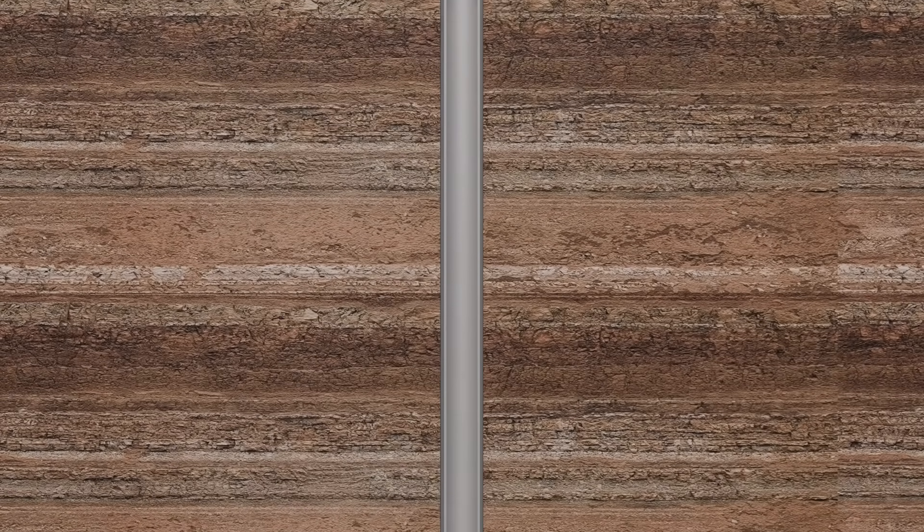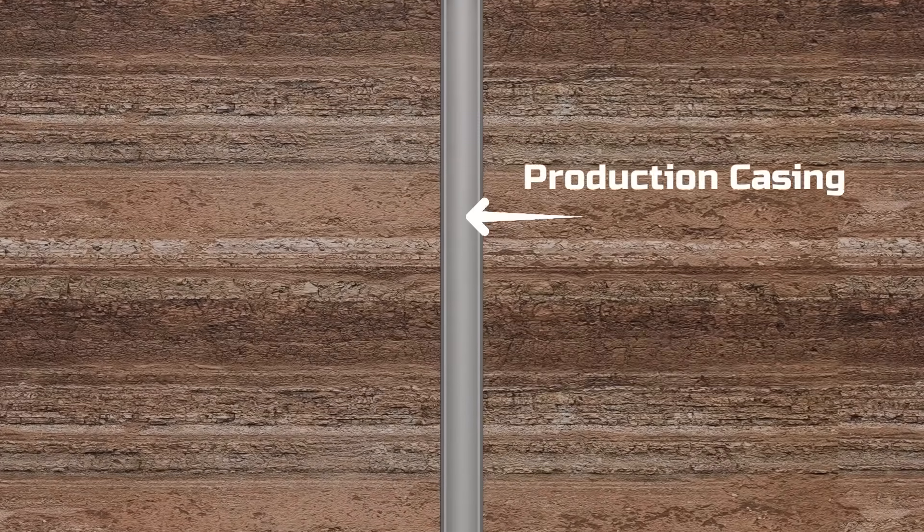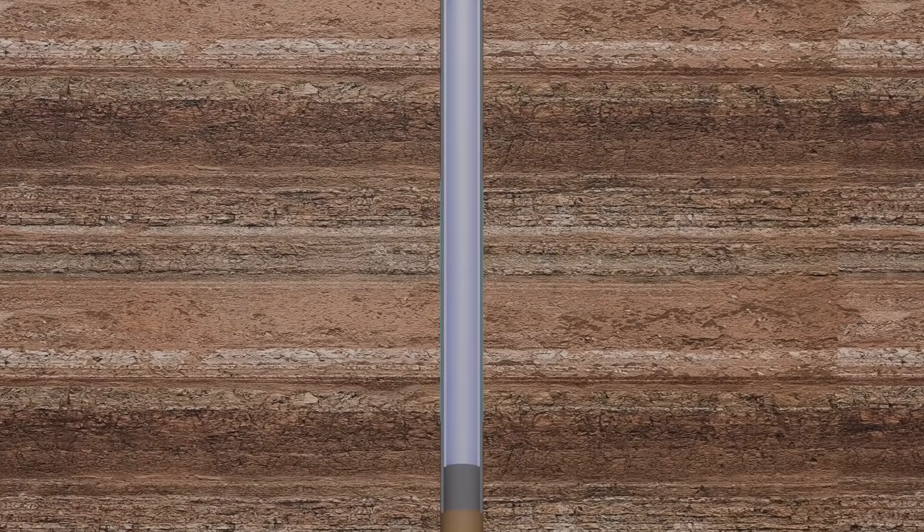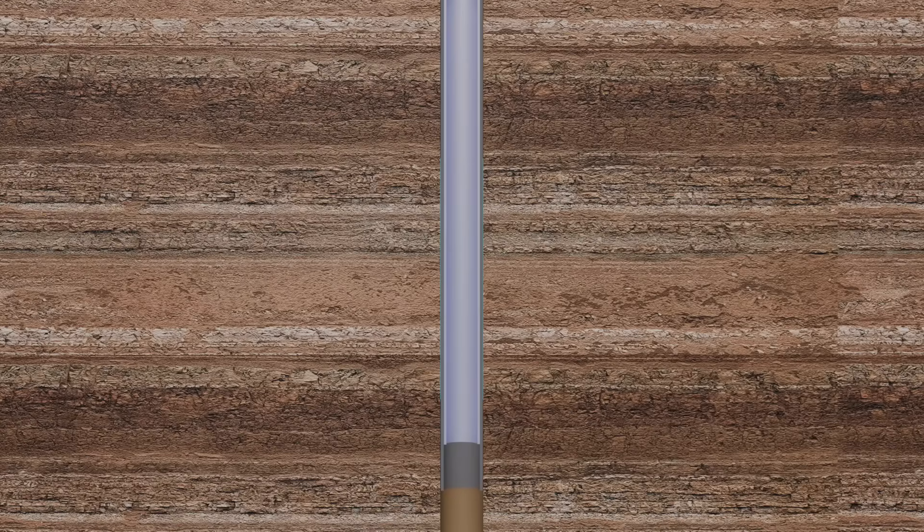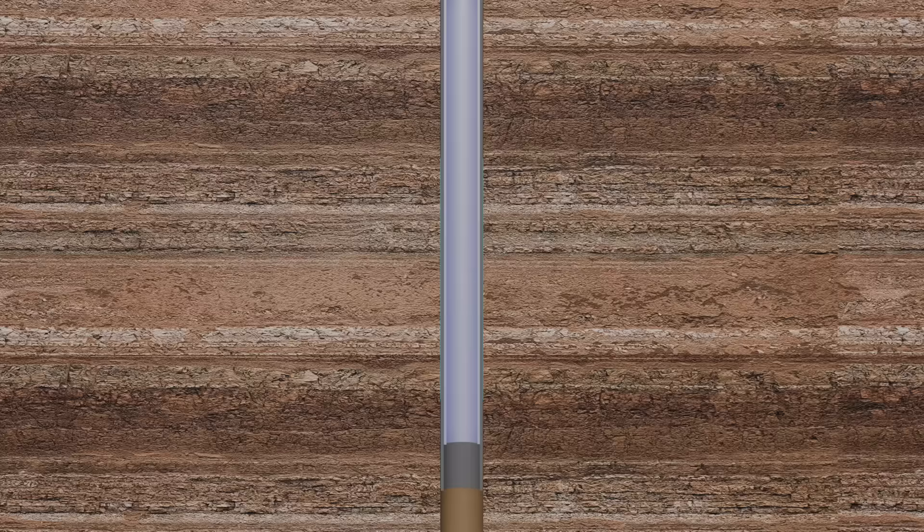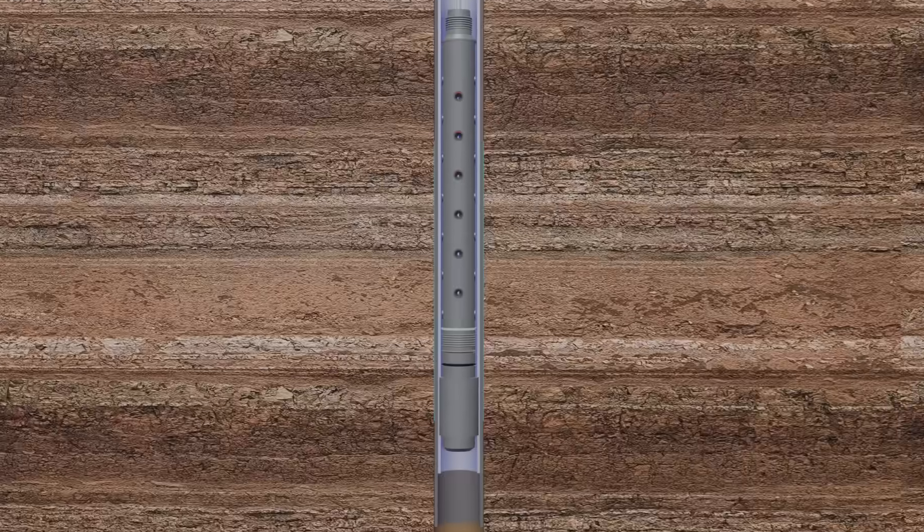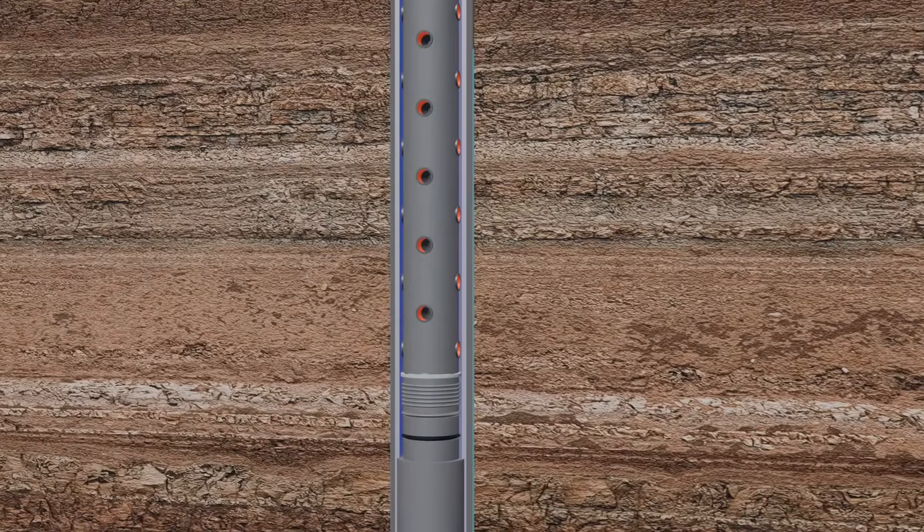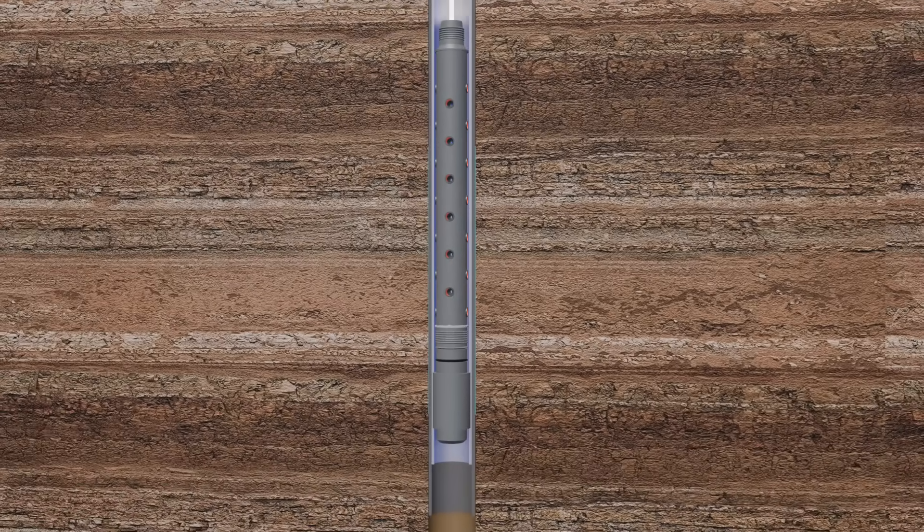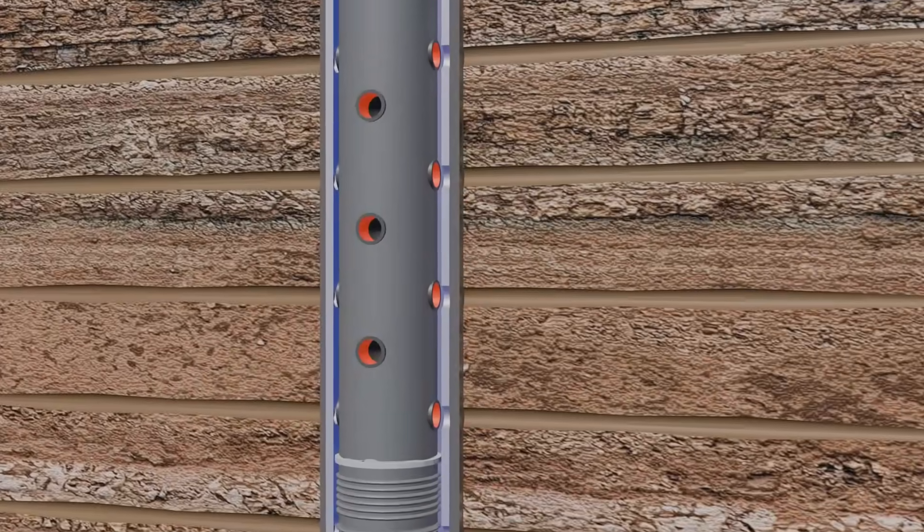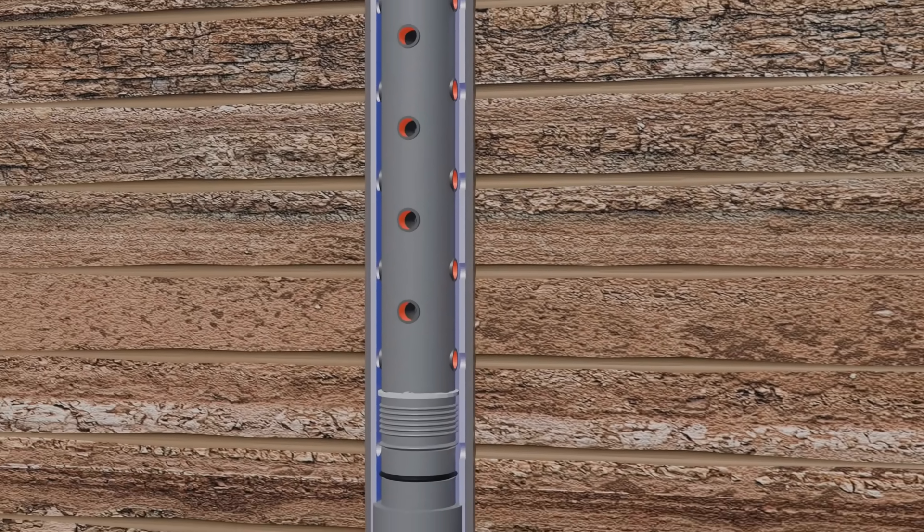A production casing is inserted into the wellbore, extending all the way down to reach the oil reserves. This casing is also surrounded by cement to provide additional protection and structural integrity. To allow oil to flow into the wellbore, controlled perforations are made through the production casing and the cement layer. This process is known as perforation. For this purpose, a perforation gun is lowered inside the casing. This gun is equipped with multiple small explosive charges. Once it reaches the designated depth, an electrical signal from the surface detonates the charges as per design, creating tunnels through the casing and cement wall to connect the oil reservoir with the wellbore.